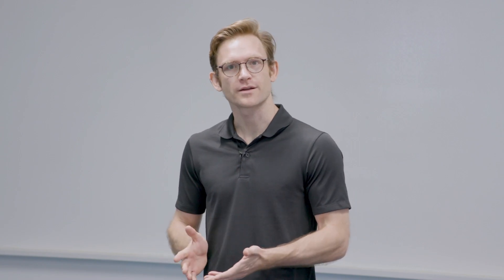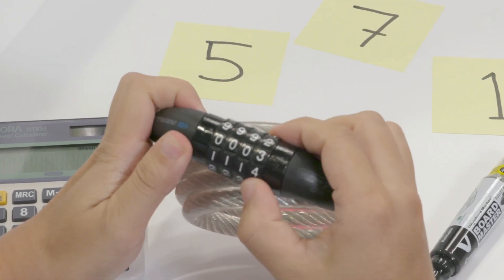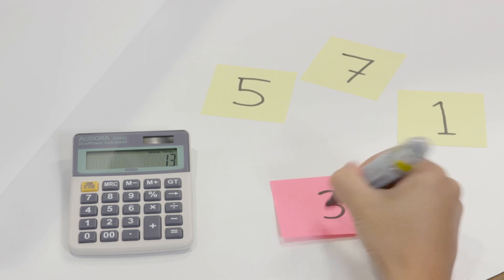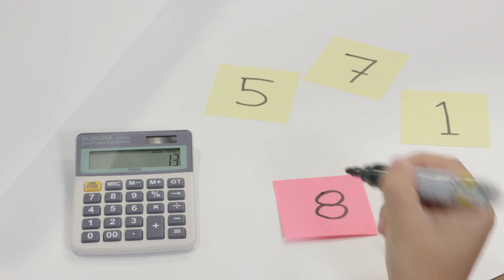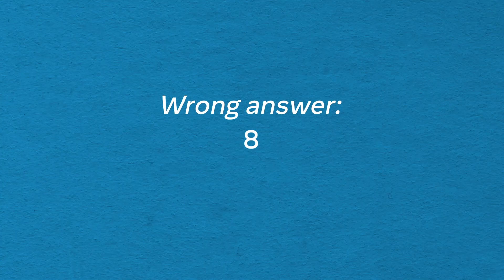But how about the addition protocol? What could an imposter do there? In that protocol, the imposter needs to add up the numbers to one side. What if they added them up wrong? Adding the numbers up wrong doesn't help the imposter violate anyone's privacy, because they don't learn anything new by doing so.